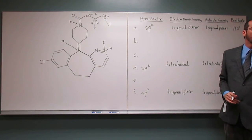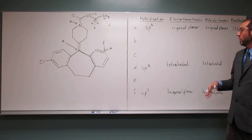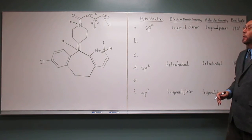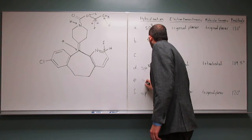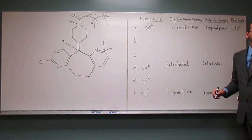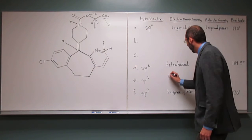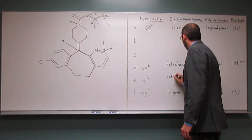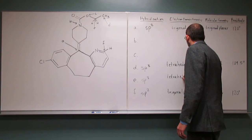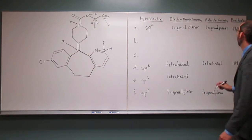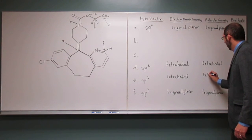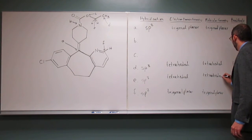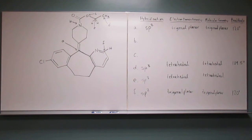Okay, so how many electron groups do we have on E? Four. Four. So what's the hybridization? SP3. SP3. The electron domain geometry? Tetrahedral. Tetrahedral. Molecular geometry? Tetrahedral. Tetrahedral. And the bond angle? 109.5. Very good.